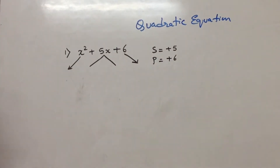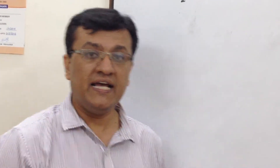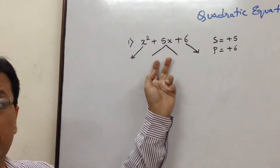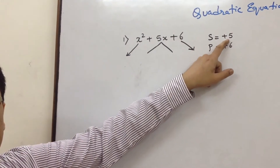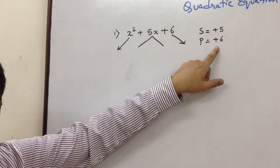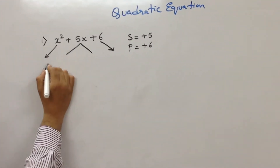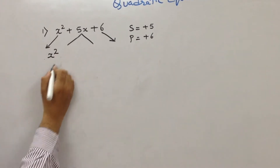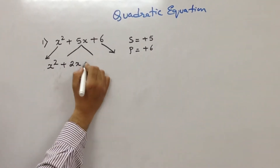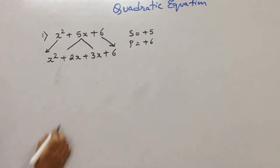Now we need to split this particular middle term in such a way — there have to be two numbers — so that the sum of those two numbers is plus 5, and the product of exactly those two numbers should be plus 6. The two numbers are nothing but plus 2 and plus 3. So, the first term remains the same; we write down plus 2 with the variable, plus 3 with the variable, and the last term is 6.